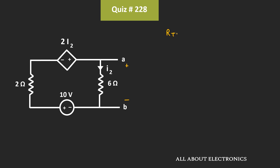The Thevenin's equivalent resistance will be equal to Vth divided by the short circuit current. First, let's find the Thevenin's equivalent voltage. Let's assume the current in this loop is equal to I. Now, if you observe, this current I is equal to I2.